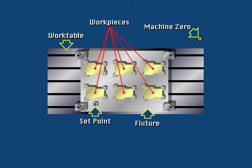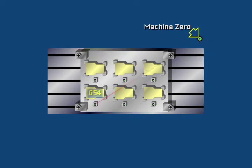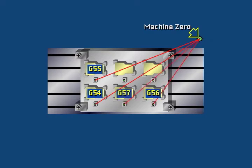The programmer could assign G54 to G59 for each workpiece zero location. It would then be necessary to mount the fixture at exactly the same location each time to be sure all of the zero locations were correct.